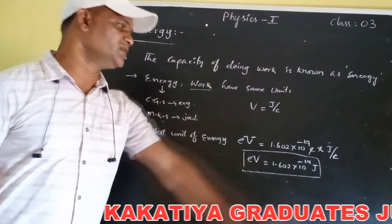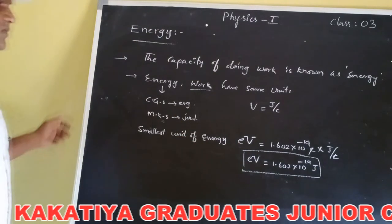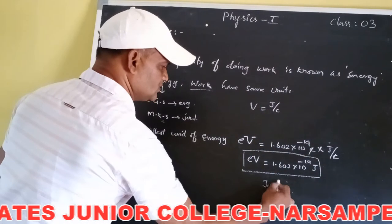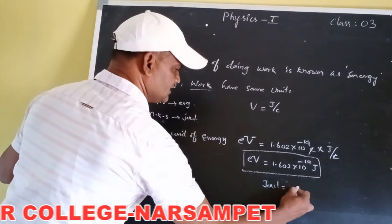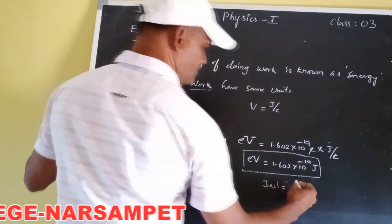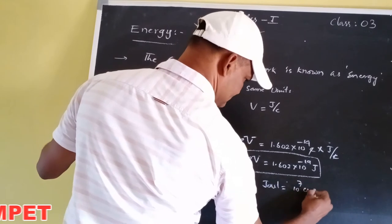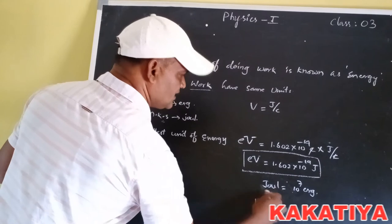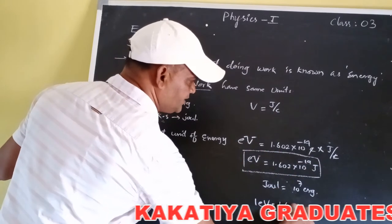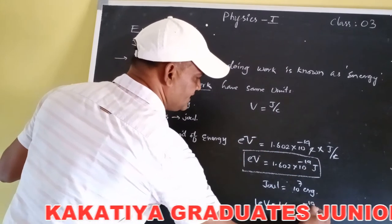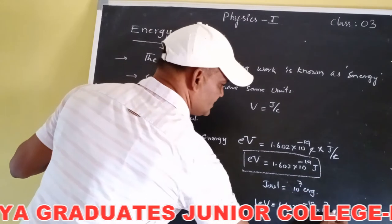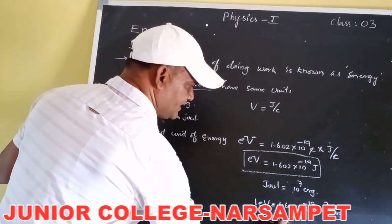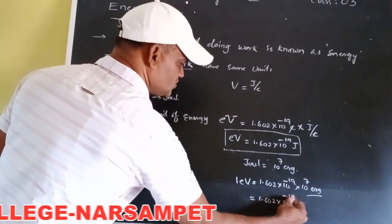1 electron volt equals 1.602 × 10⁻¹⁹ joule. Converting to CGS units: since 1 joule equals 10⁷ erg, 1 electron volt equals 1.602 × 10⁻¹⁹ × 10⁷ erg, which gives 1.602 × 10⁻¹² erg.